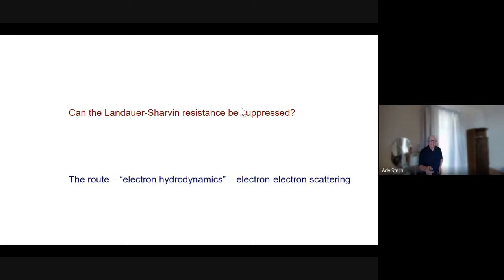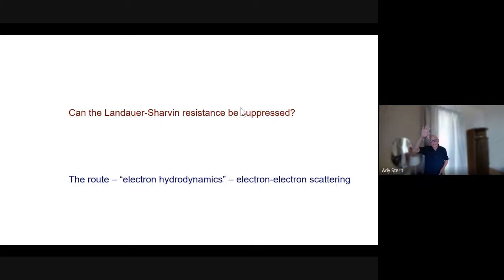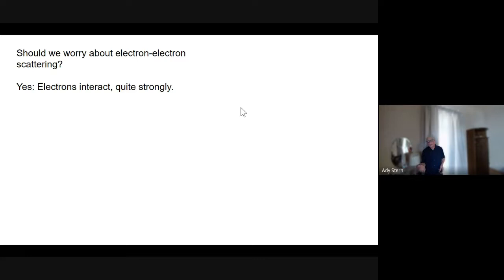Now, what I'd like to talk about is: can we make the resistance smaller than the Landauer-Sharvin limit? The route I'm going to take is electron hydrodynamics — another way of saying scattering between electrons. We're going to look at the effect of electron-electron scattering and ask: can we use this scattering to make the resistance small?